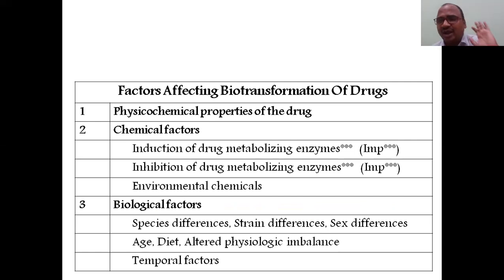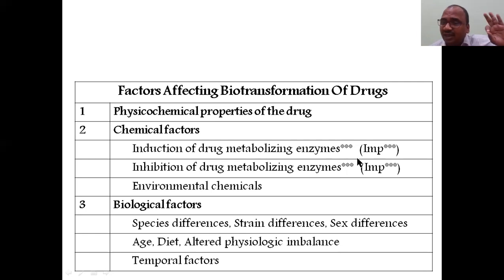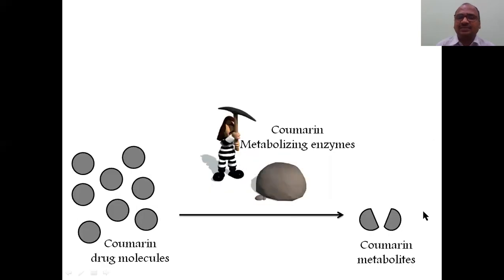There are a number of factors that affect the entire biotransformation system. This list should be written in the examination — but explain only two in detail. Chemical factors include induction and inhibition of drug metabolizing enzymes, which are very important. Other factors include environmental chemicals, biological factors like age and diet, altered physiological imbalance, and temporal factors.